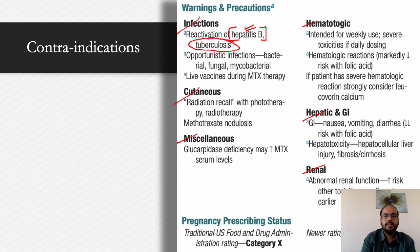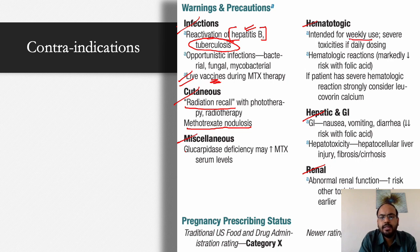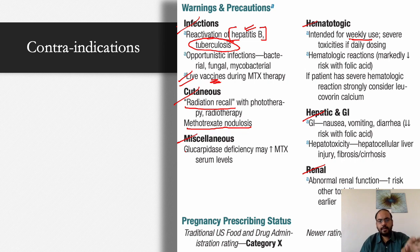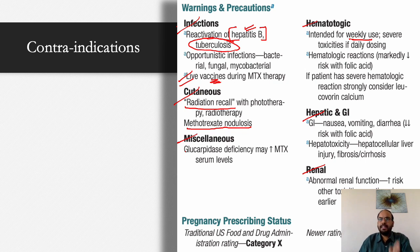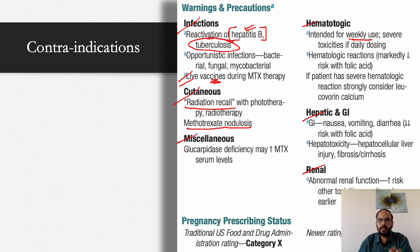Other considerations include live vaccines (discussed separately), radiation recall, and methotrexate nodulosis. Hematologically, for weekly dosing effects are limited. The first sign of myelosuppression is decreased platelet counts due to platelets' shorter half-life. However, note that elevated platelets can also be a marker of inflammation — when methotrexate controls inflammation, platelet counts may normalize. Hematological reactions are markedly decreased with folic acid supplementation.